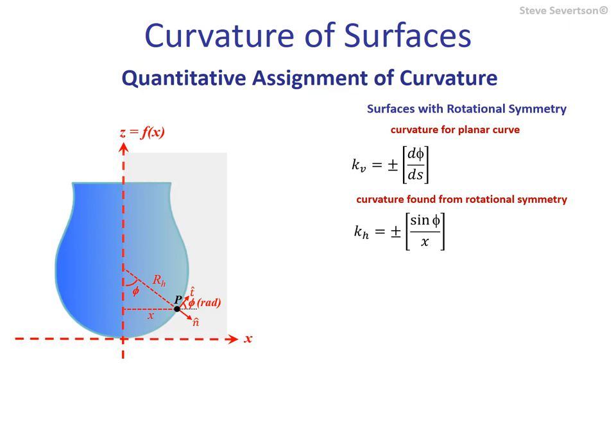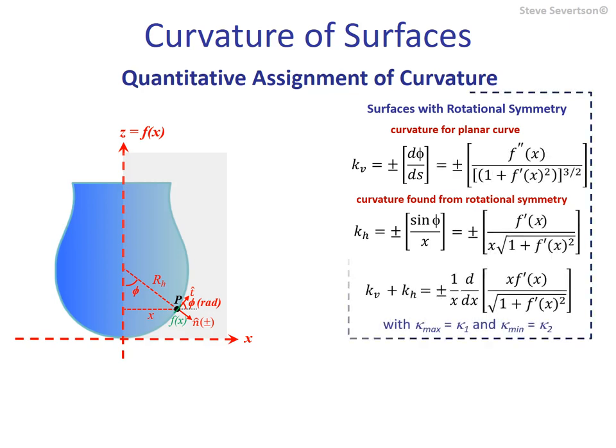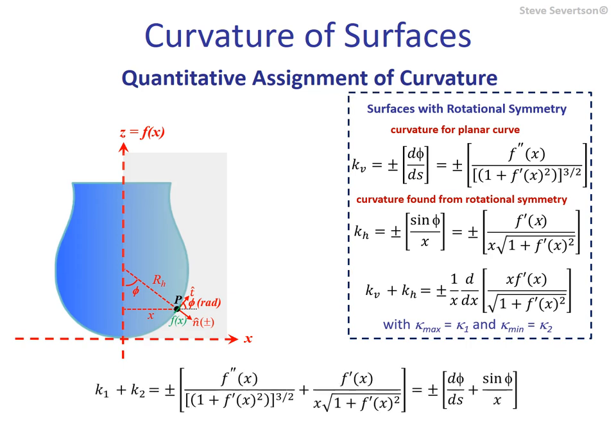The plus-minus symbol is required because we are free to place the unit normal inside or outside the shape — it is not calculated. With the normal outside the shape, we take the values as determined, which could include some negative values. If we move the normal inside the shape, oriented towards its center, we multiply the determined values by negative one. Finally, if we have a function that fits the outline of the image — often a local empirical fit surrounding the point of interest — the curvature values at a point can be determined using the following relationships, where the final expression contains both local curvatures when expanded.